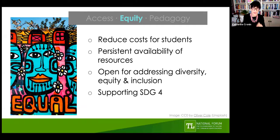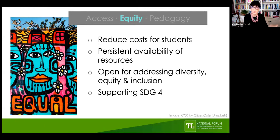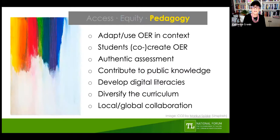The second area where OER and OEP have potential is furthering equity — central in most discussions of open education, and particularly so in the past year. OER can reduce overall costs for students if teachers are using open textbooks and open resources, providing what we call persistent availability — something like an open textbook available before, during, and after a module as well as during breaks and study. Studies by the USI and others show financial hardship for students has certainly been exacerbated in the past year, so persistent availability of resources can be really powerful.